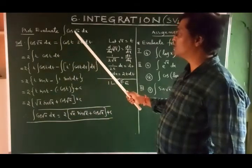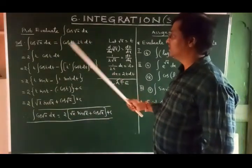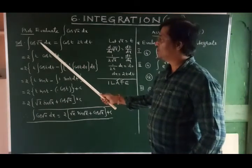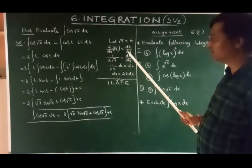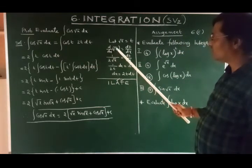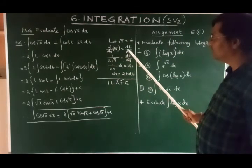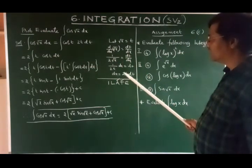Evaluate integral cos(√x) dx. Here, substitute √x = t. Differentiate with respect to x on both sides. We will get d/dx √x = 1/(2√x),